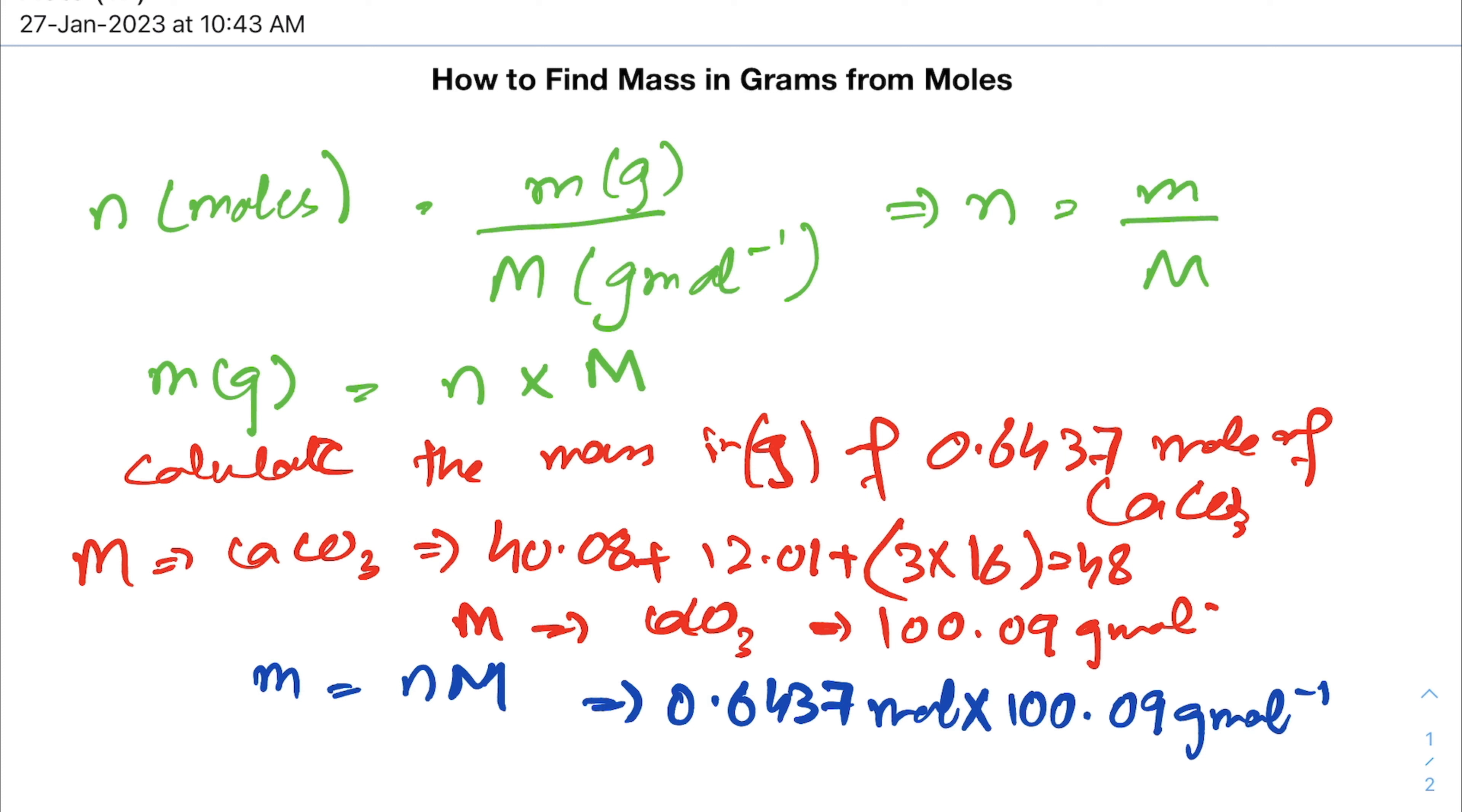The final mass in grams is equals to 64.43 grams. So by the help of this generalized formula, we are able to find out the moles of the compound, and if we already know the moles of the compound, we are able to find the mass of the moles in grams.